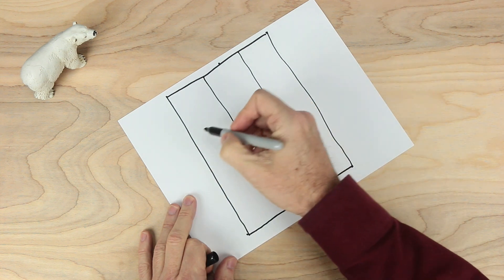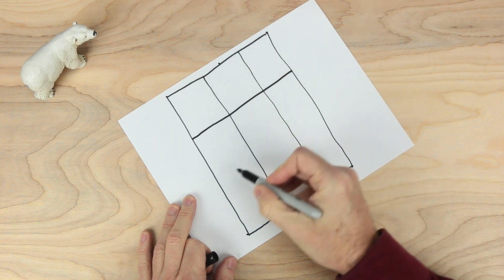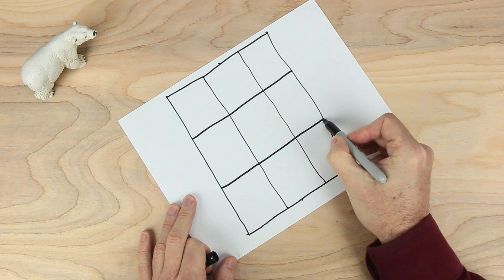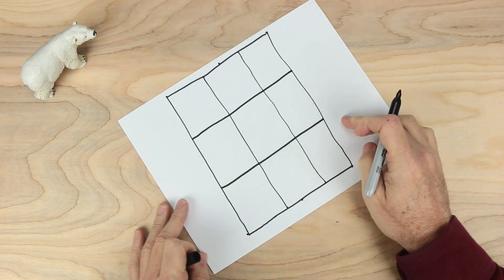Let's do it the other way as well. About right here. And right here. Those are okay. Now we have a grid, a three by three grid. Let's make it more interesting.